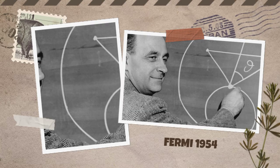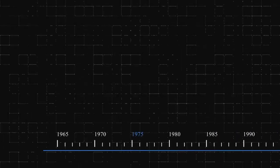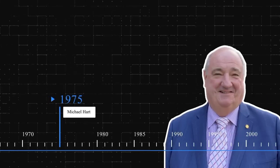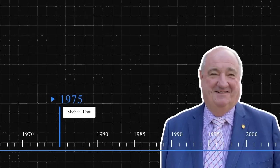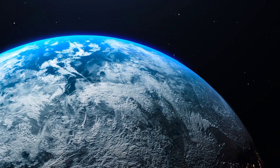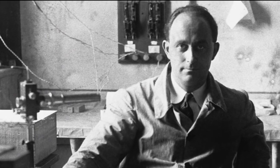Fermi passed away in 1954. Therefore, it was up to others to further develop and explain the theory. Michael Hart did this in a 1975 paper for the Royal Astronomical Society, RAS Quarterly Journal, titled An Explanation for the Lack of Extraterrestrials on Earth. Some claim that this is the first paper of its kind to examine the Fermi Paradox.